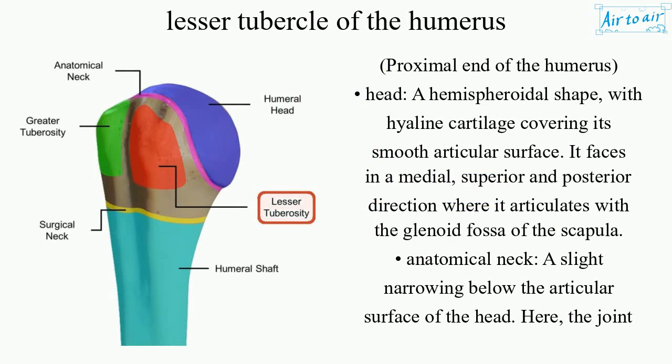Proximal end of the humerus — head. A hemispheroidal shape, with hyaline cartilage covering its smooth articular surface. It faces in a medial, superior and posterior direction, where it articulates with the glenoid fossa of the scapula.